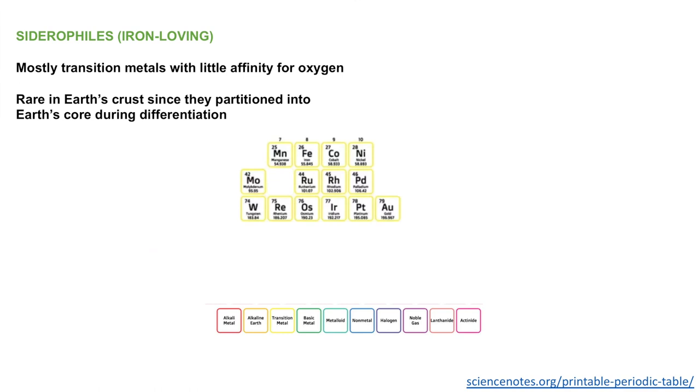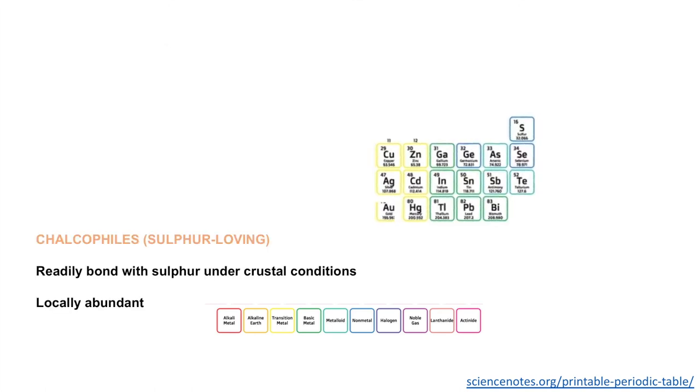We also have what's known as siderophiles, iron loving elements. Siderophiles are mostly transition metals that don't have much of an affinity for oxygen. These elements are particularly rare in Earth's crust, and that refers to when Earth was being accreted and undergoing differentiation with the metallic Earth's core and the mantle. A lot of these elements would rather exist in that metallic core, so they partition towards the core, which is why they're enriched there and hence depleted in Earth's crust. Then we have what's known as the chalcophiles. These are sulfur loving elements that rather than bonding with oxygen will readily bond with sulfur under crustal conditions. These are locally abundant because elements will concentrate in sulfur and then sulfur will accumulate to form what's known as an ore deposit. Ore deposits are things that we mine for metals today.